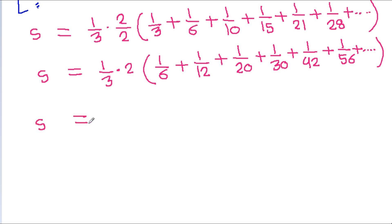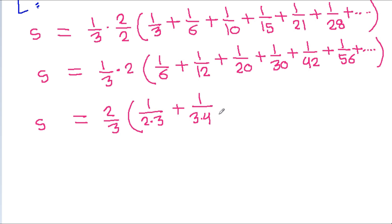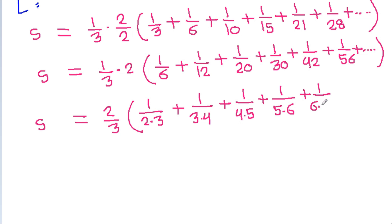And S is equal to 2 by 3 times the sum where: 1 by 6 is 2 times 3, plus 1 by 12 is 3 times 4, plus 1 by 20 is 4 times 5, plus 1 by 30 is 5 times 6, plus 1 by 42 is 6 times 7, plus 1 by 56 is 7 times 8, plus and so on.